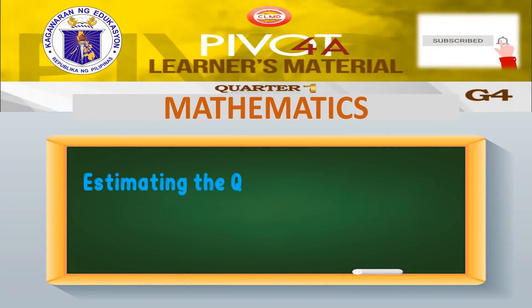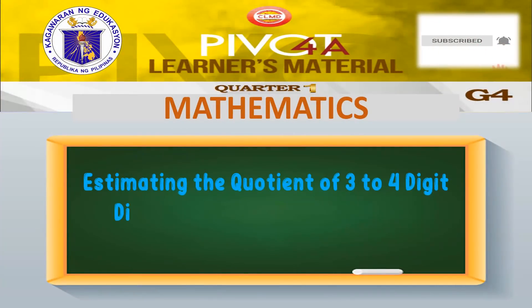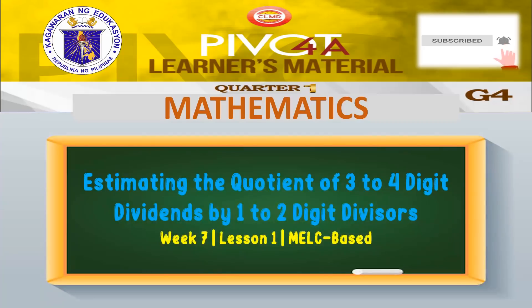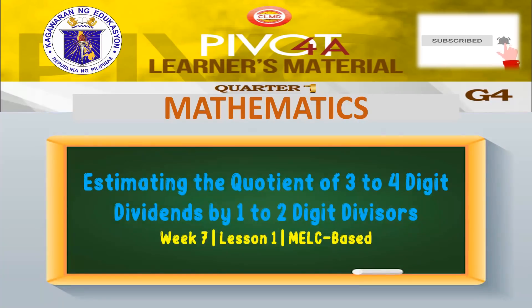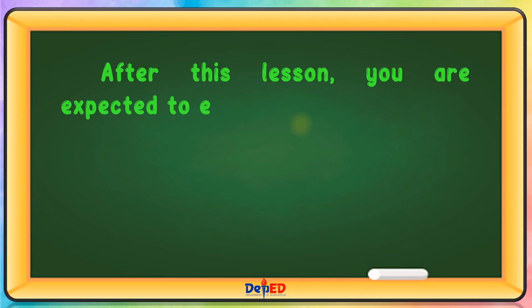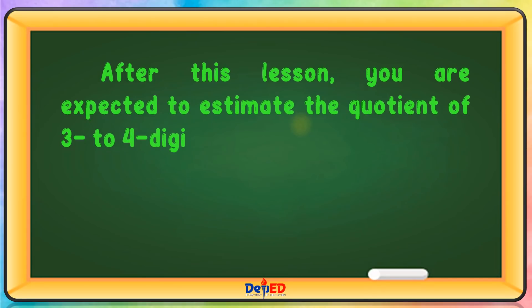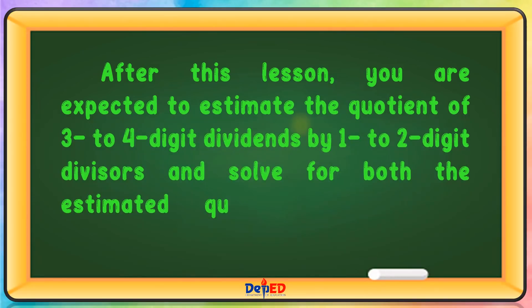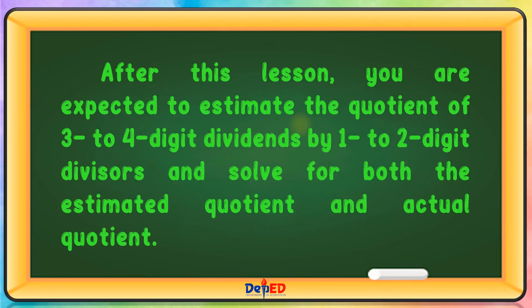Good day, everyone! Today we will be discussing estimating the quotients of 3 to 4-digit dividends by 1 to 2-digit divisors. After this lesson, you are expected to estimate the quotients of 3 to 4-digit dividends by 1 to 2-digit divisors and solve for both the estimated quotients and actual quotients. Let's do this.